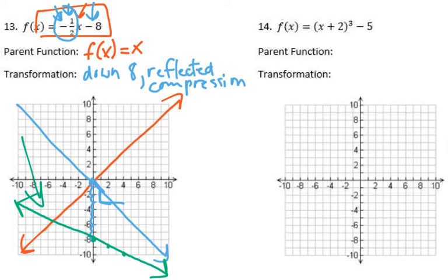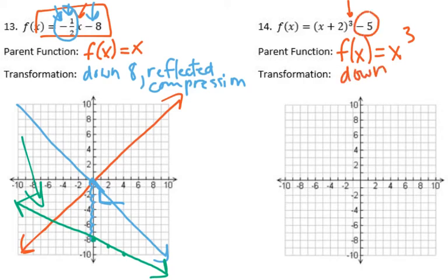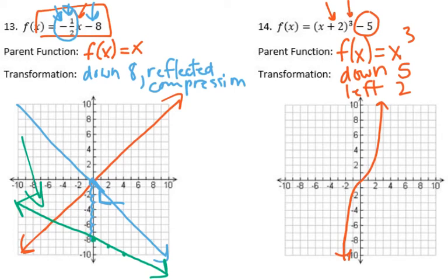Number fourteen: f of x equals (x plus two) cubed minus five. It's got that cubed, so our parent function is a cubic, x cubed. We've got minus five on the outside, so that's down five. Plus two on the inside, so that's left — and opposite — two. The cubic looks like that basic S-curve shape. So we're moving that center point down five and to the left two, and it's going to follow that same shape.